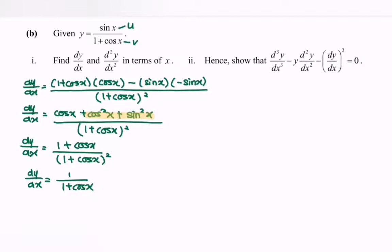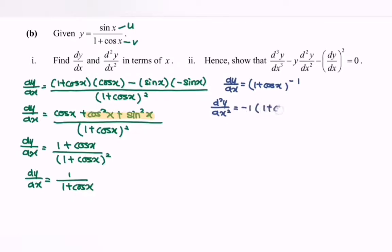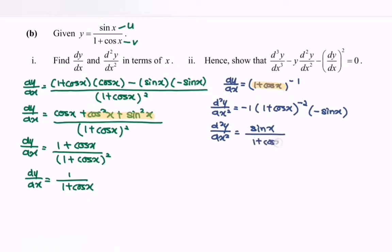Next, find the second derivative. Rewrite dy/dx = (1 + cos(x))^(-1). Differentiating a second time using the chain rule: d²y/dx² = -1 · (1 + cos(x))^(-2) · (-sin(x)) = sin(x) / (1 + cos(x))².